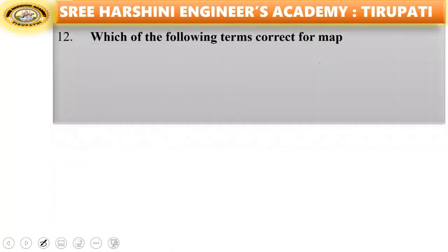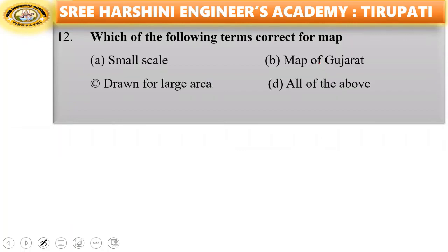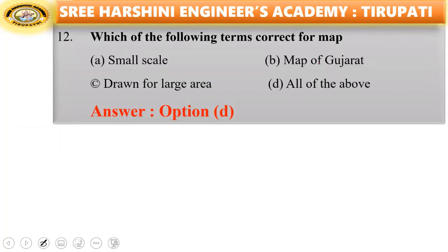Next question: which of the following is correct for maps? A small scale map of Gujarat drawn for a large area — all of the above is the answer.